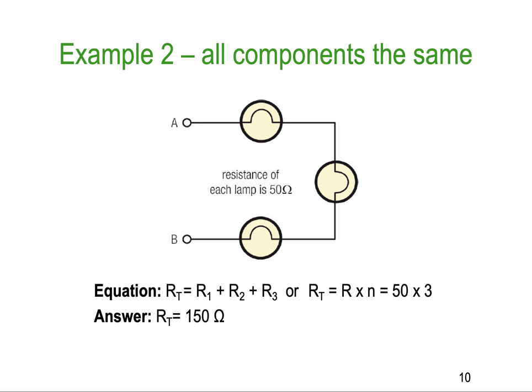Here's a second example where we've actually got three lamps in series with each other, and each of the lamps has the same resistance. So, it's like putting three resistors of the same kind. So, this one is 50 ohms, I'll just write 50R, a bit easier than the omega symbol. So, this one is 50R, 50R,